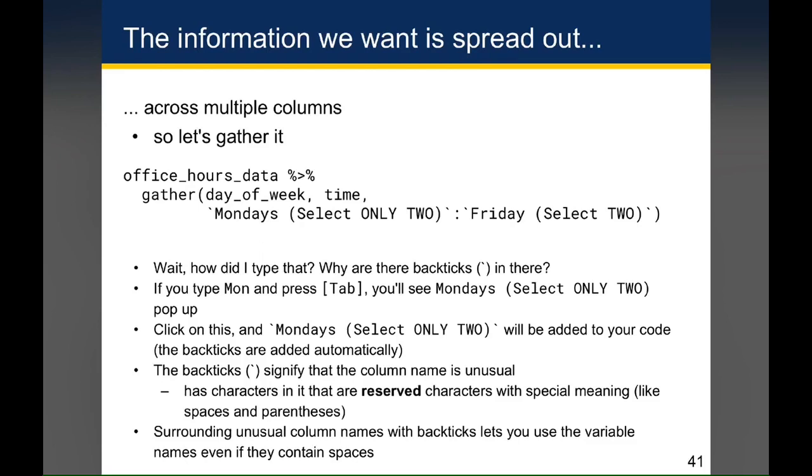If you look carefully, you'll notice that there's back ticks surrounding the Monday's space parentheses select only two end parentheses, as well as the Friday select to end parentheses. And so you might be wondering how the heck I typed that and what do those mean? When I was actually typing this in RStudio, I did not type those back ticks. What I actually typed was MON and then I hit the tab key. I saw Monday's pop up, I clicked on it, and those back ticks got inserted automatically. The reason the back ticks got inserted is that the back ticks signify that the column name is unusual. Typically, this means it has characters in it that are considered reserved characters with special meaning. For example, spaces and parentheses.